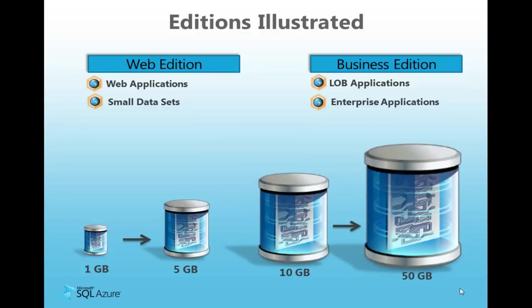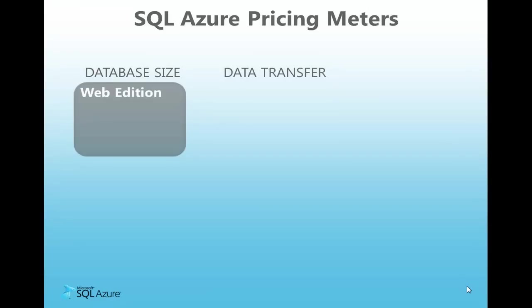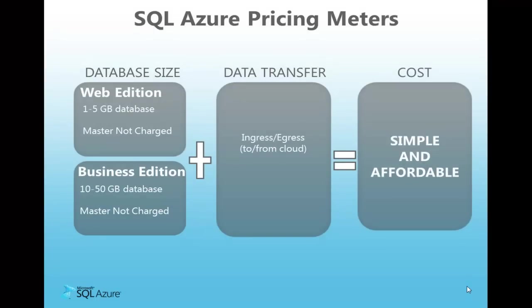Billing begins with the creation of a SQL Azure subscription. There are two pricing meters for SQL Azure Database. Database size constitutes the first meter, and data transfer in and out of the cloud is the second. A monthly fee is charged for each SQL Azure database, except for master databases, which don't incur a charge. The database fee is amortized over the month and is charged daily. The daily fee depends on the peak size of the database during that day, and the price of the edition and size increment that database fits within. Let's walk through some examples to make this clearer.